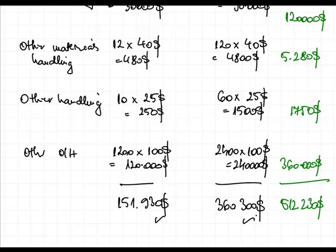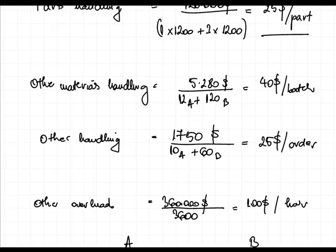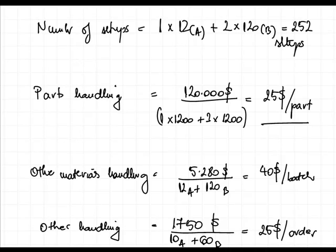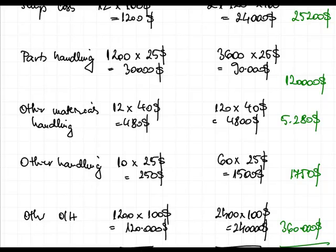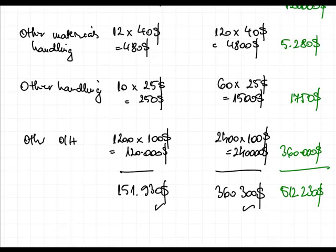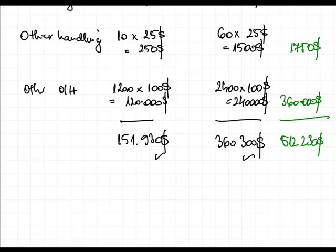Note that these costs — $151,930 for A and $360,300 for B — are for the total production of A's and B's. You could have done it on a unit level, but it's complicated since the costs per activity are not on a unit level but on the cost driver level, and one cost driver is not equivalent to one unit. So it's easier to do it at the total level, then divide by total units produced.